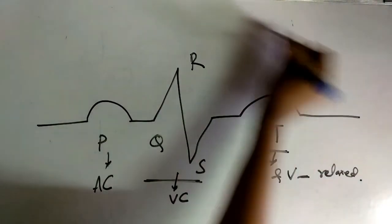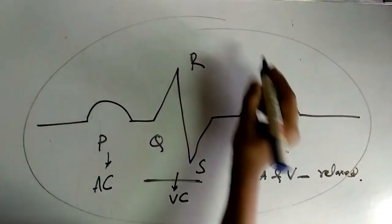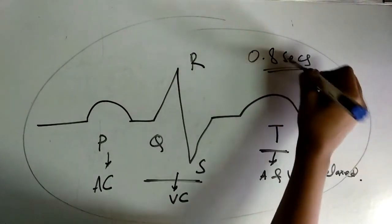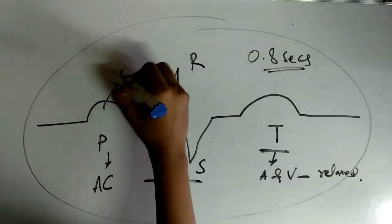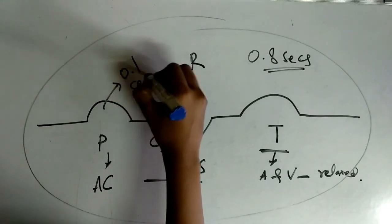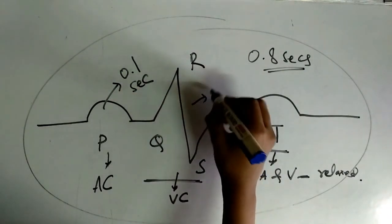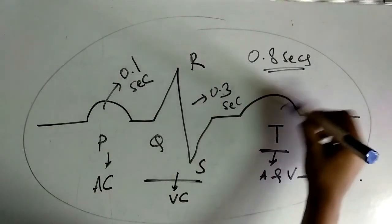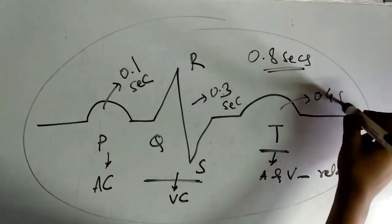This complete cycle occurs in 0.8 seconds. P wave is generated in 0.1 seconds, QRS complex is generated in 0.3 seconds, and T wave is generated in 0.4 seconds.